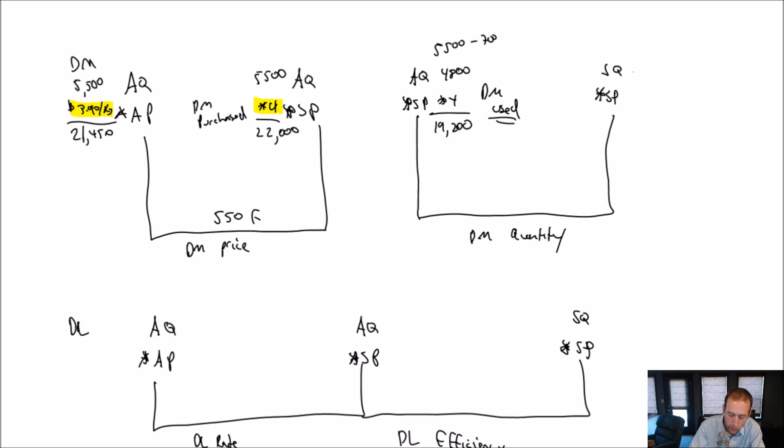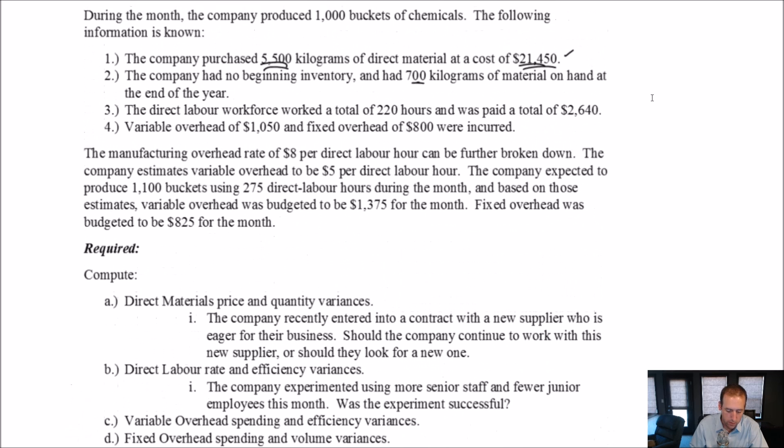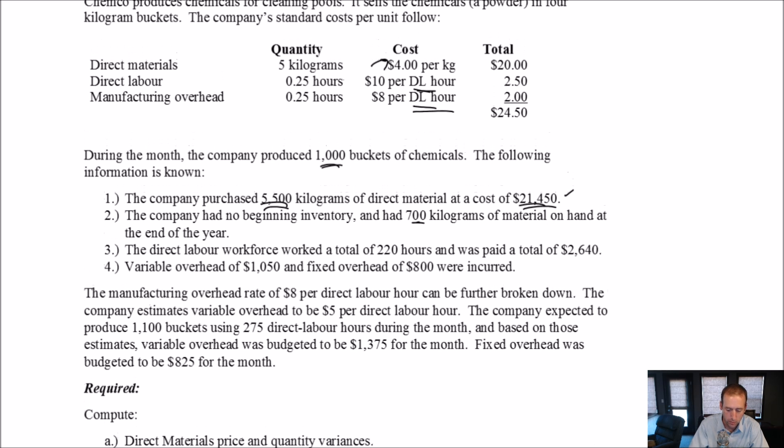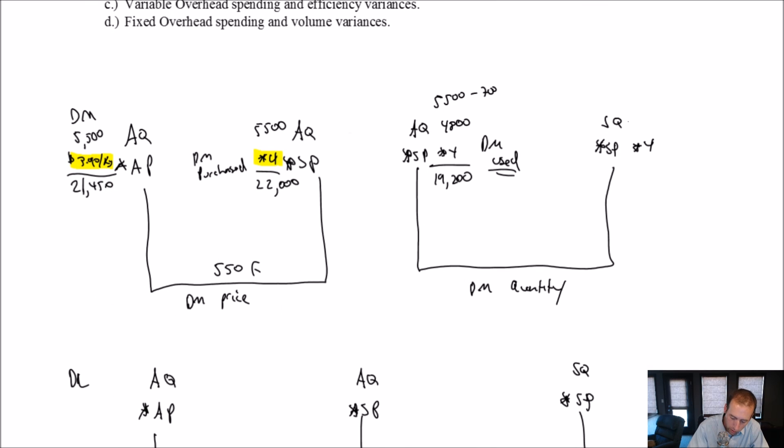Again, we purchased 5,500 kilograms, but we had 700 left over. Our actual quantity used here is 4,800. Our SP remains $4. 4,800 times $4 is $19,200. Moving over to SQSP, well, we know our SP. It's $4. Our standard quantity, remember what we're doing here. We're saying, given the actual number of units I made, how much direct material ought to have been used. So, given the fact that I actually made 1,000 buckets of chemicals, how much material should have been used? Well, we go up to our standard cost and we say it should take 5 kilograms of material per bucket, and we made 1,000 buckets. So, 5,000, right?